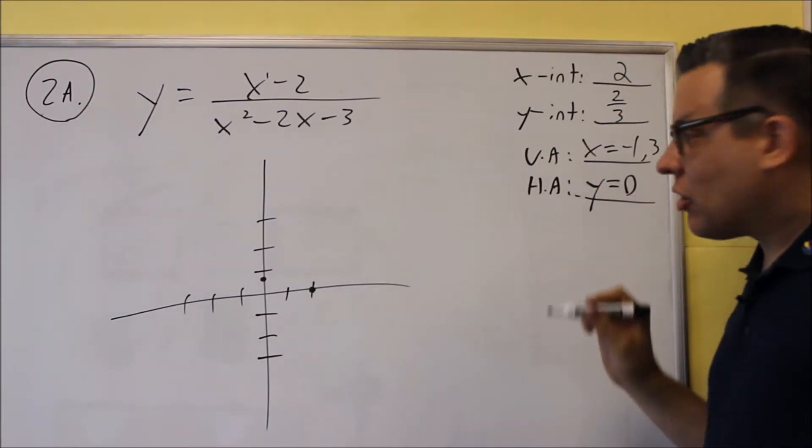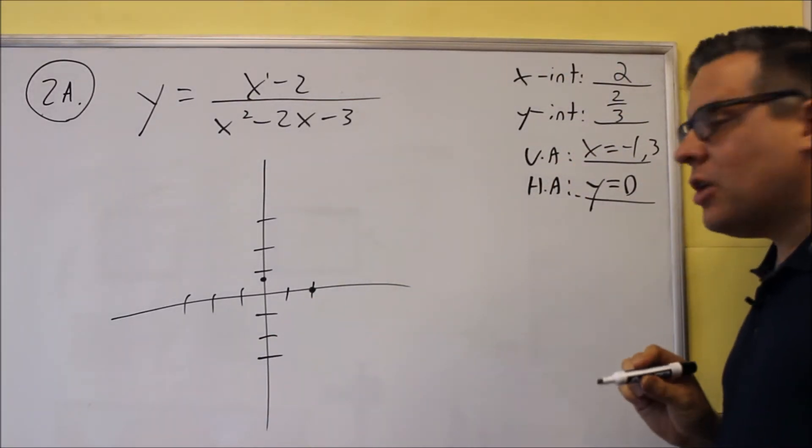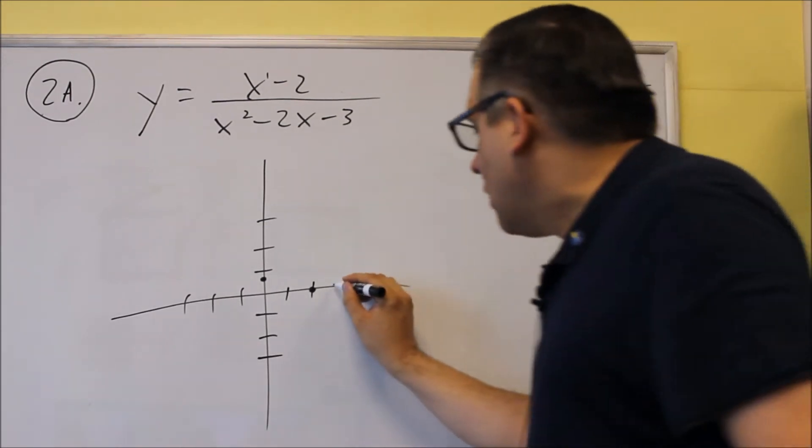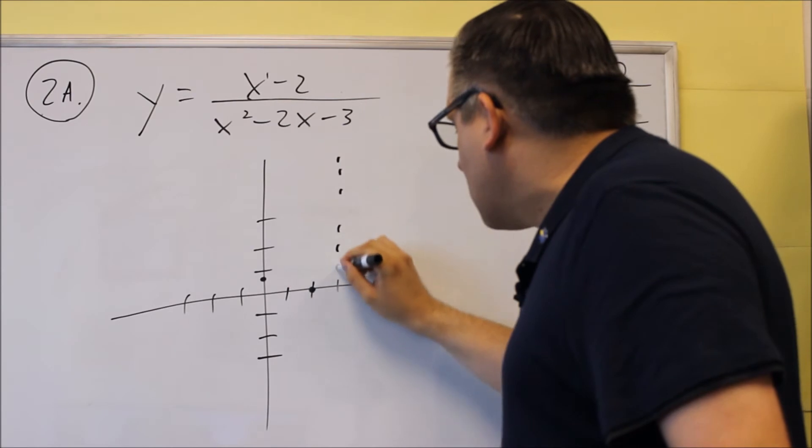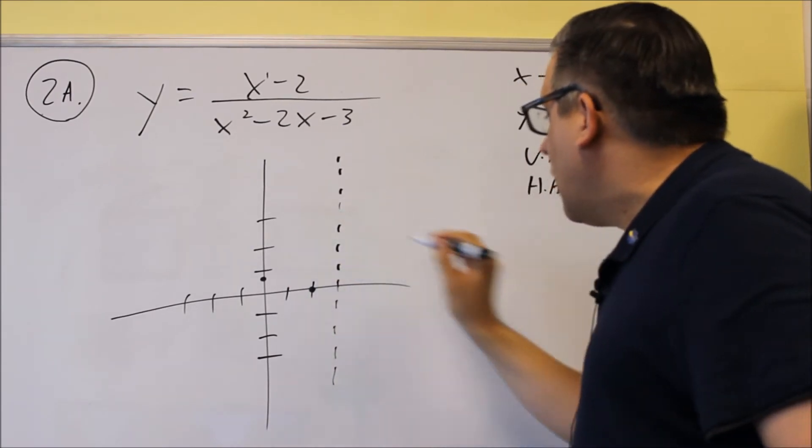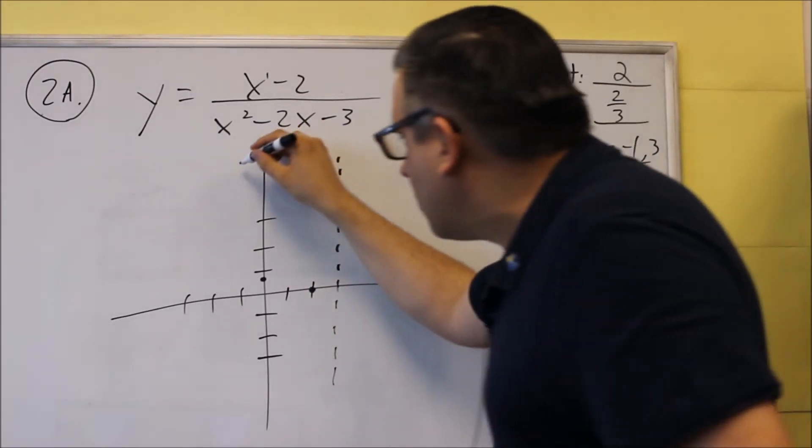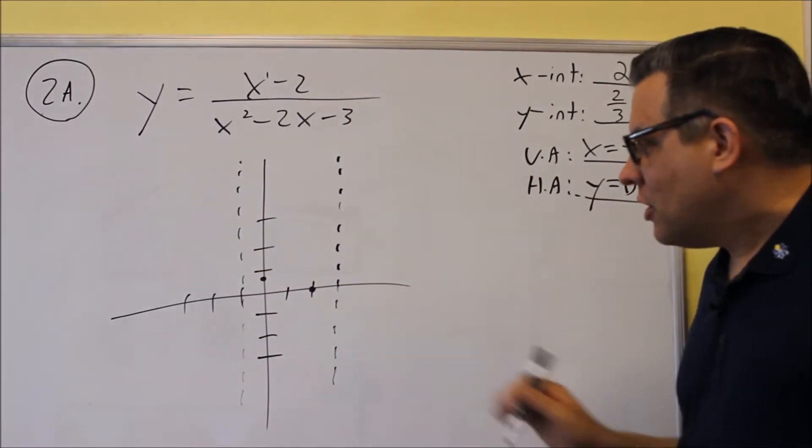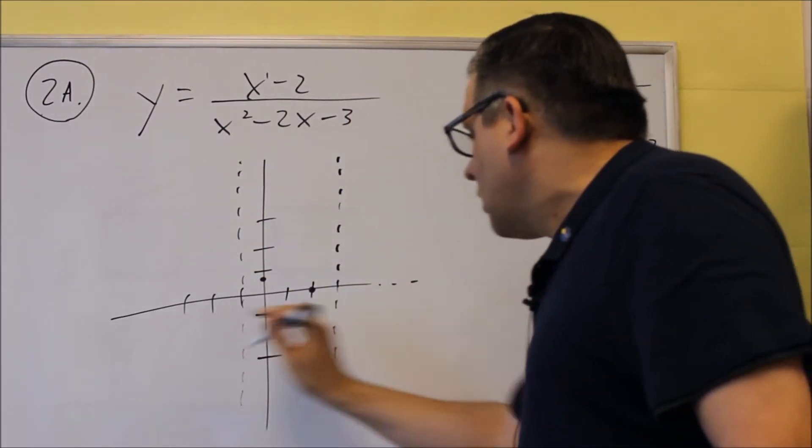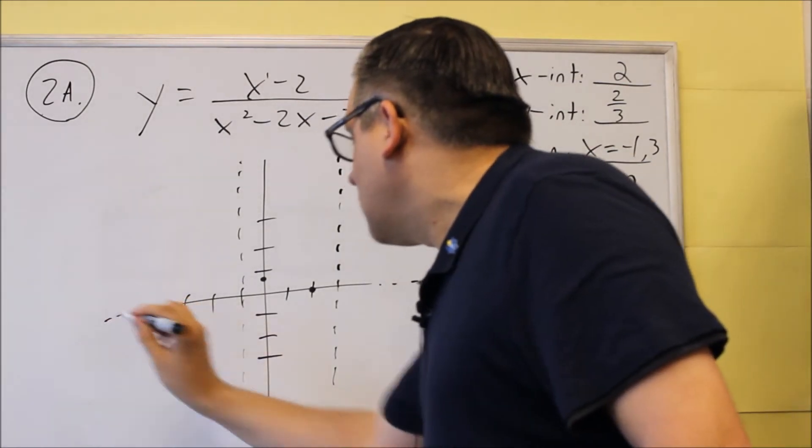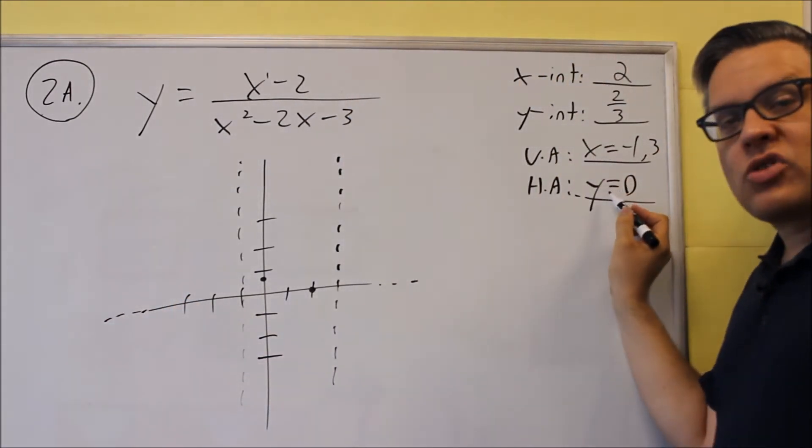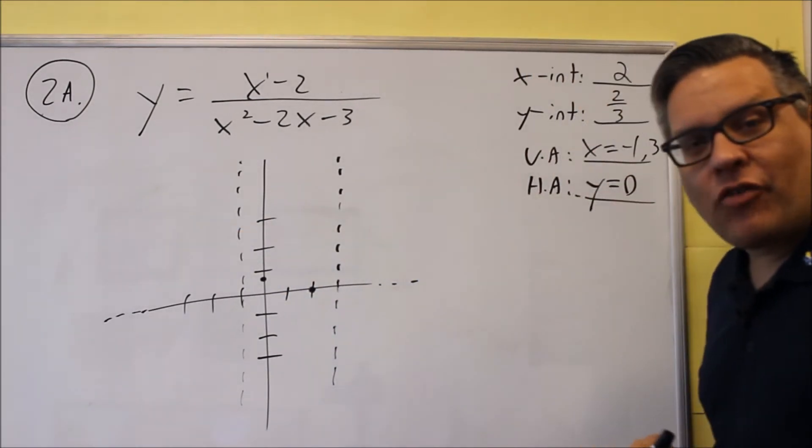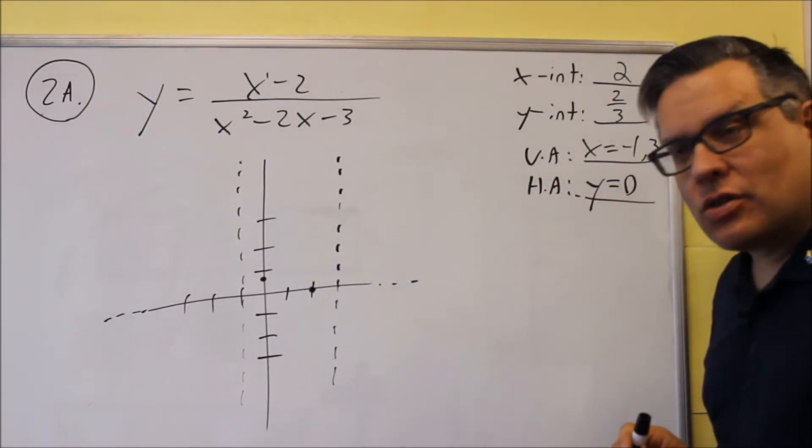Now we also have these vertical asymptotes. The vertical asymptotes are going to be at negative one and three. So I'm going to show those by putting in some vertical dotted lines. So here's one that goes through at three and the other one goes through at negative one. So we start with that as our setup. Now on the ends here, we're going to have dotted lines on the end because that's our horizontal asymptote y equals zero.